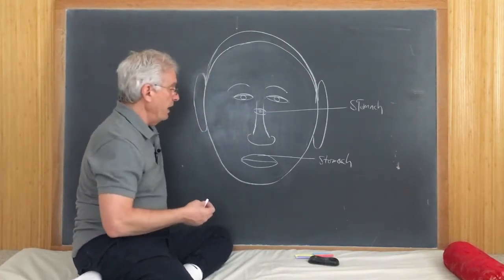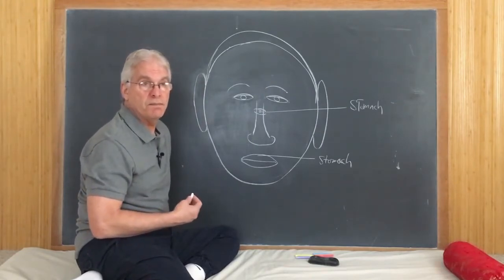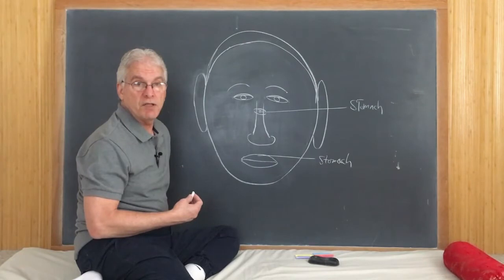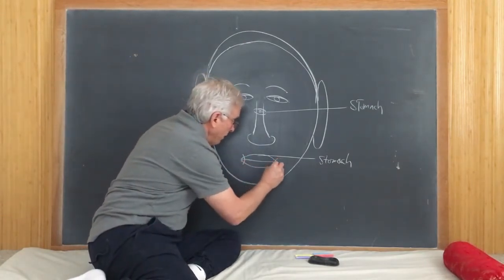The stomach empties its contents into a proper part of the small intestine that's called the duodenum. And we see the duodenum right on the corners of the mouth.